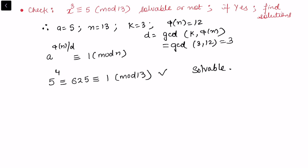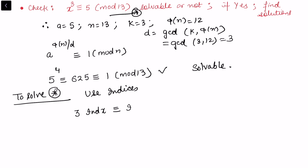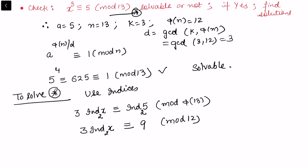Now to solve x³ ≡ 5 (mod 13), we use the concept of indices. Taking indices on both sides gives 3 · ind(x) ≡ ind(5) (mod φ(13)), i.e., mod 12. Taking 2 as a primitive root, ind₂(5) = 9, since 2^9 ≡ 5 (mod 13). So we have 3 · ind(x) ≡ 9 (mod 12).